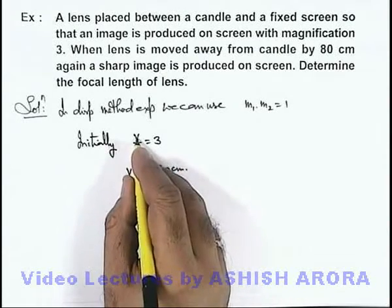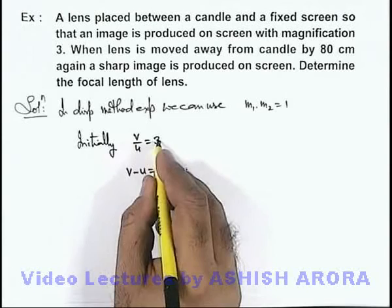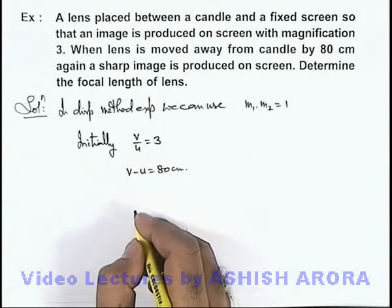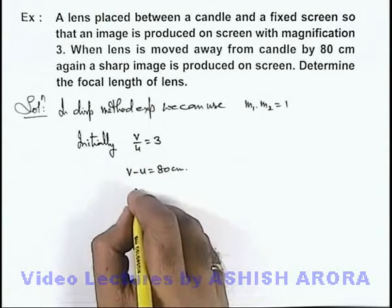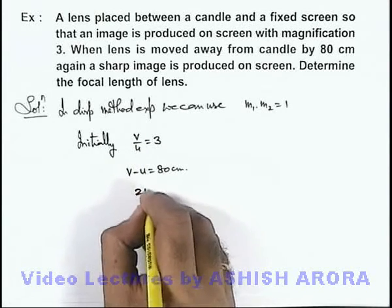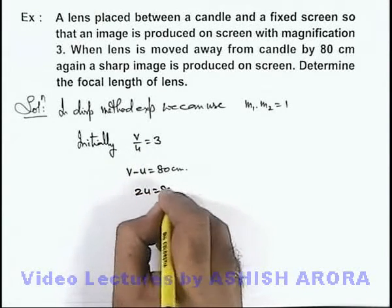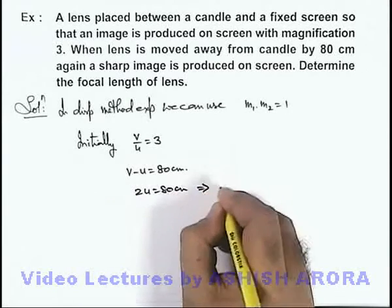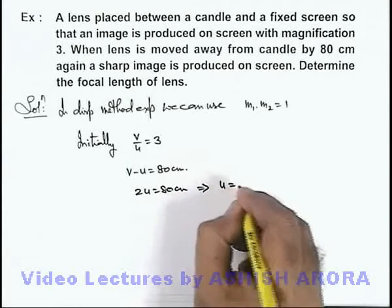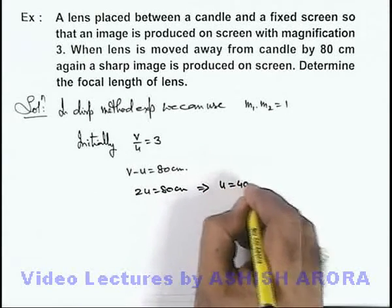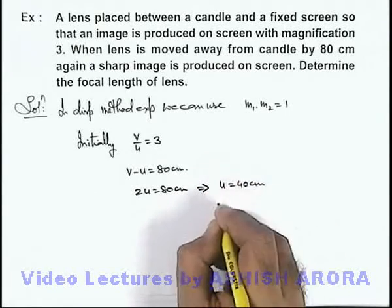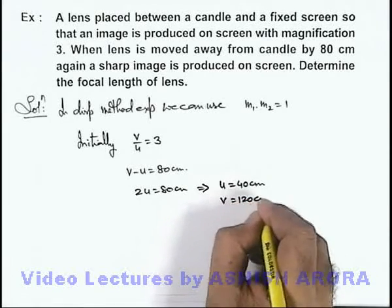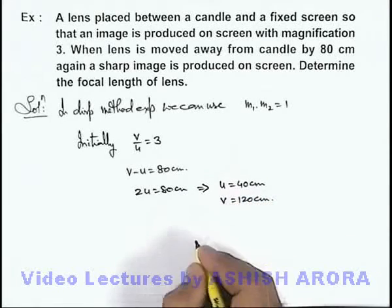Substituting v equals 3u into the displacement equation gives 2u equals 80 centimeters, which implies the object distance u equals 40 centimeters. The image distance v is therefore 120 centimeters.